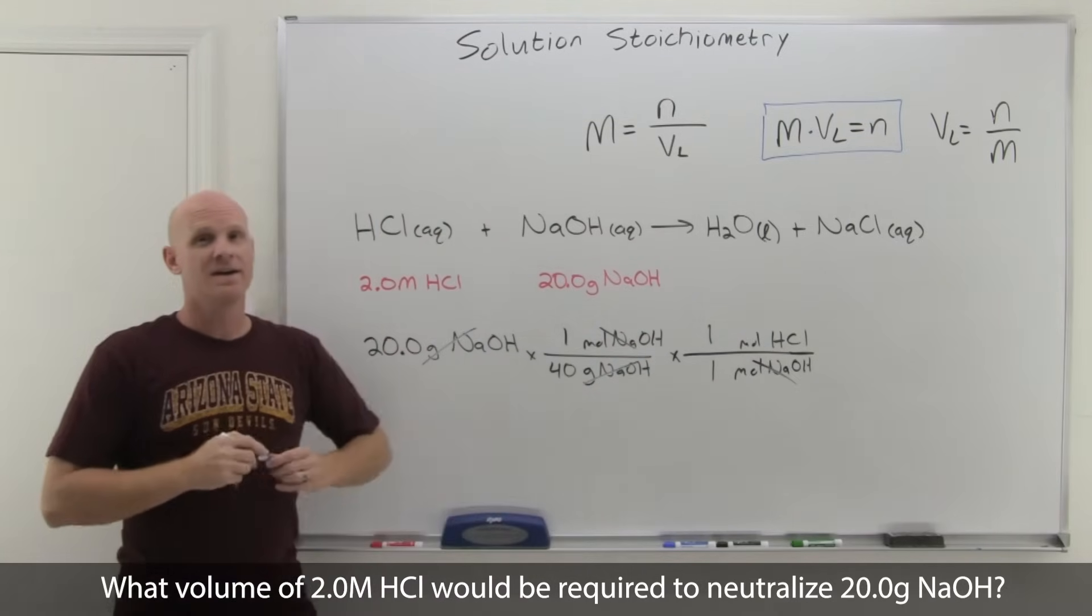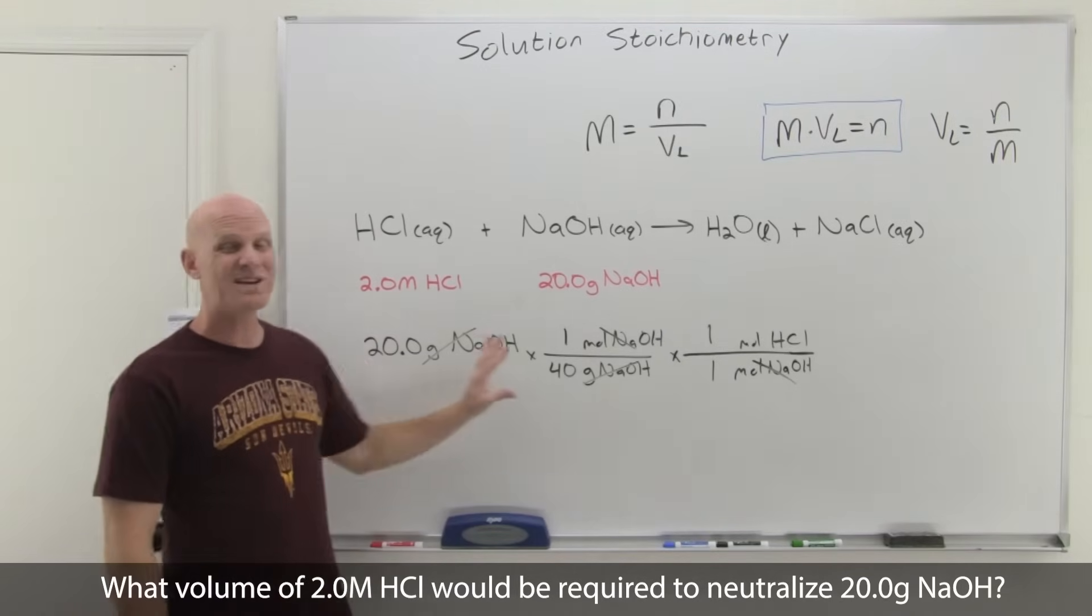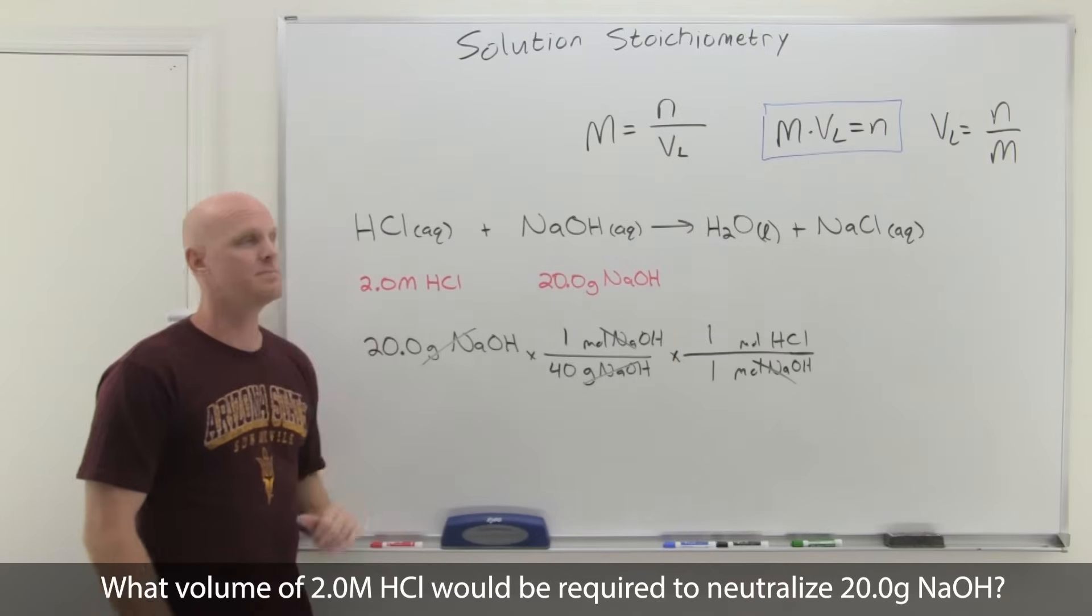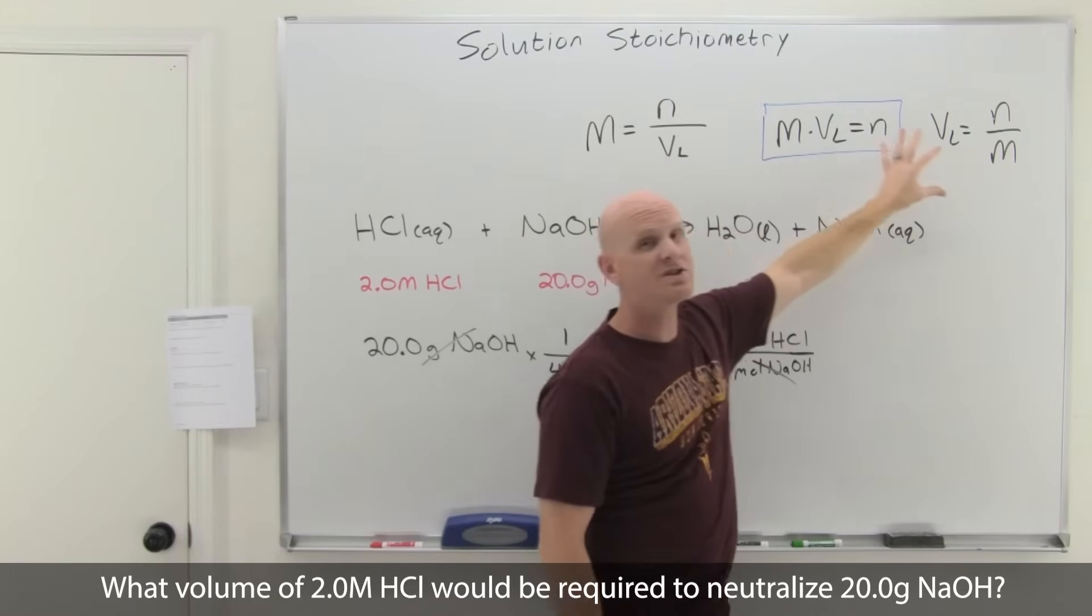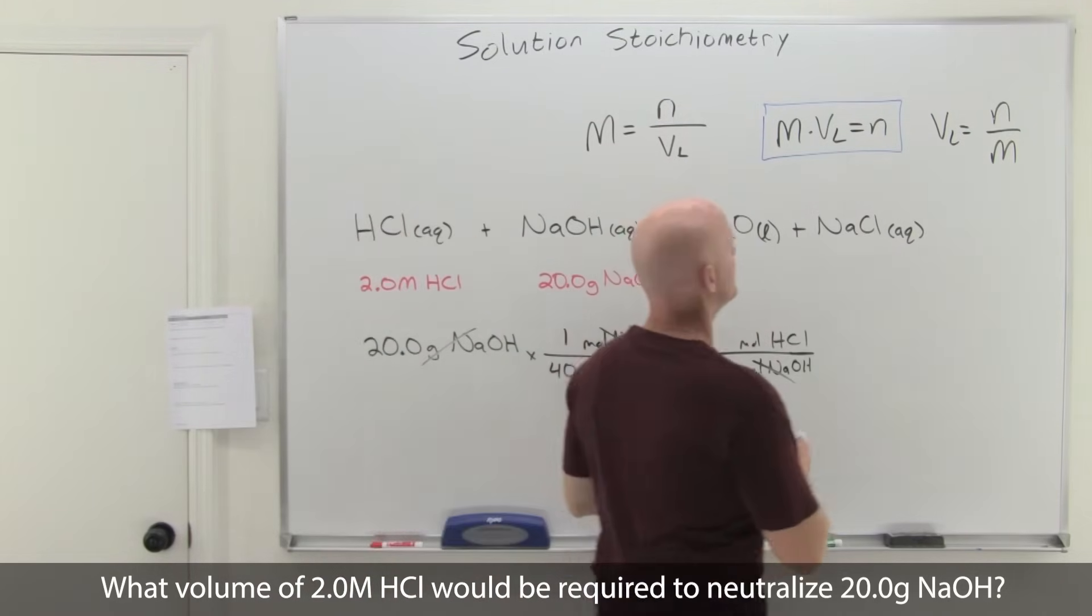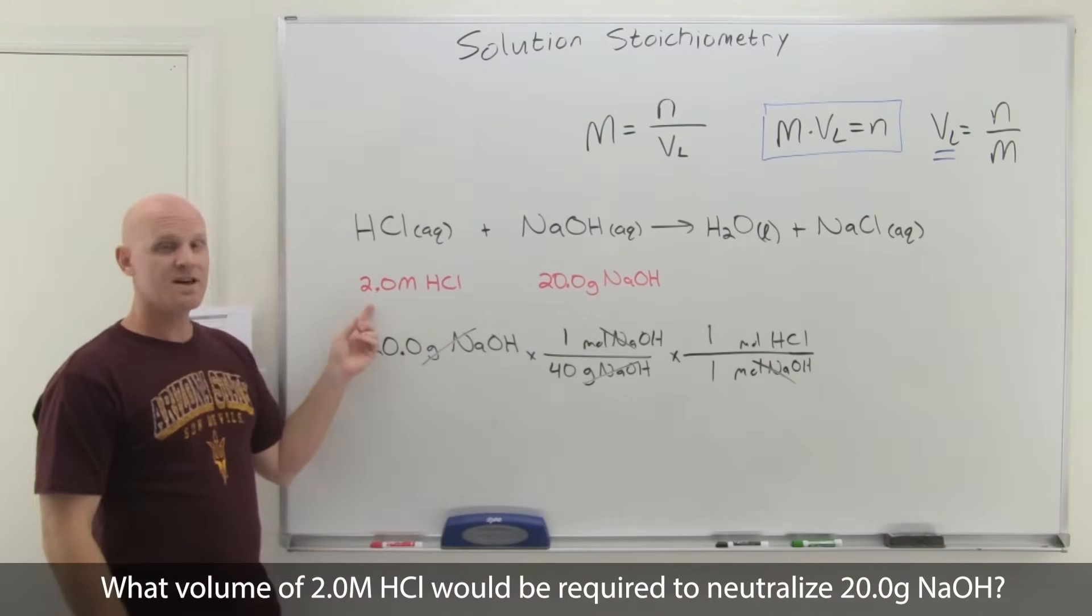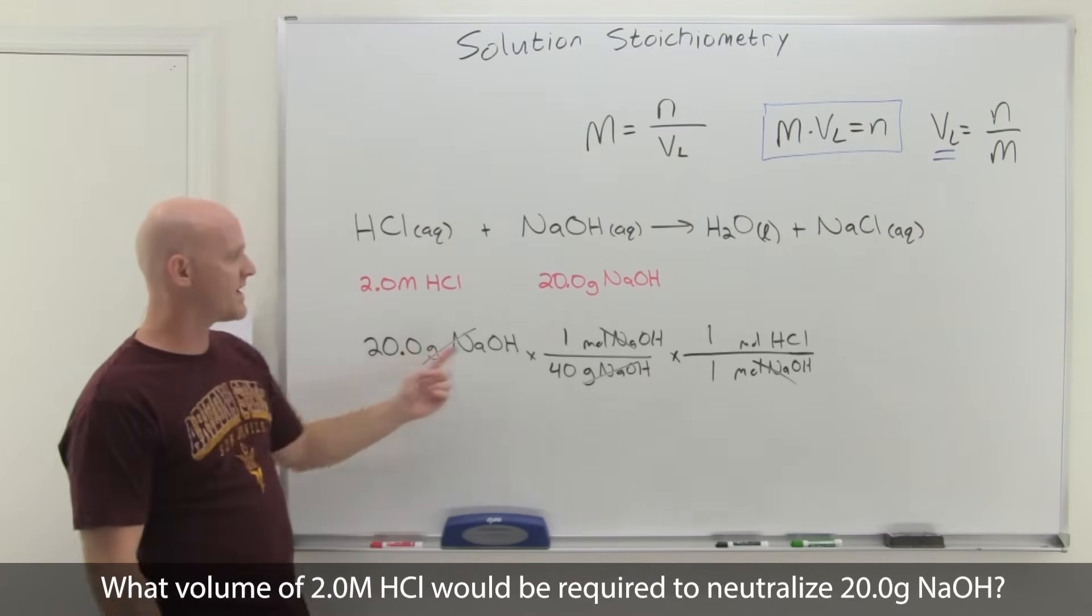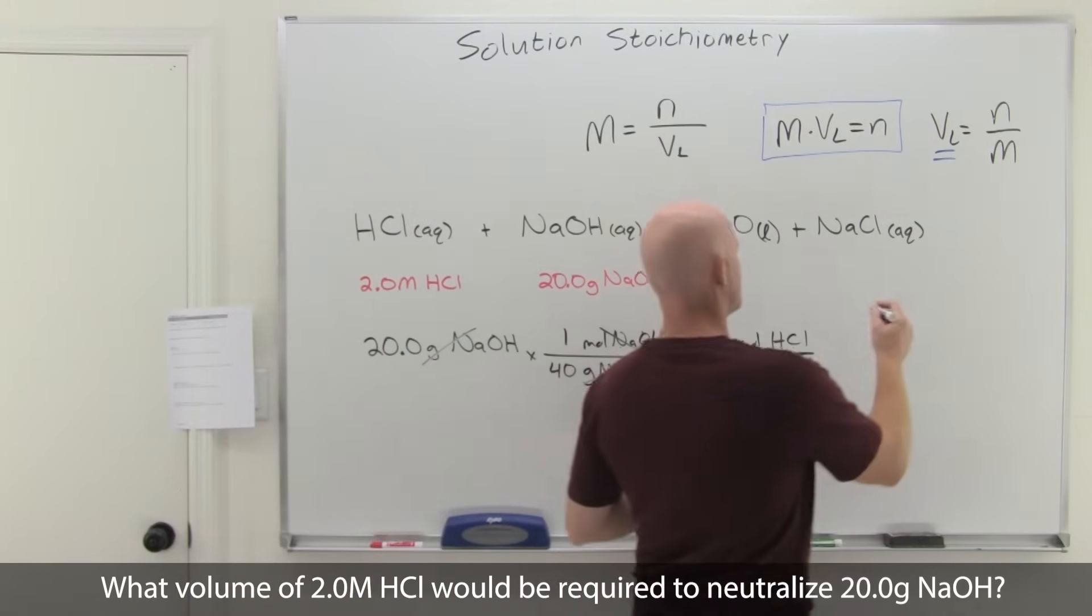Now we're going to have the moles of HCl, and we need to turn that into a volume. We could finish out the dimensional analysis, but my preference when you're trying to find molarity or volume is to use one of these expressions and treat it as an algebraic expression. If we're trying to solve for volume, we'll use this last one: it's just moles divided by molarity. The molarity was given, and we just solved for the moles of HCl. 20 divided by 40 was 0.5 times 1 over 1 is still 0.5.